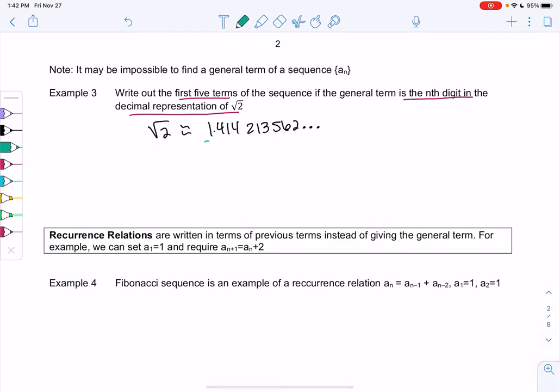This sequence is just the digits. So the first one is 1, second one is 4, 1, 4, 2. Those will be my first five terms. And there's no nice formula for the a_n term here.